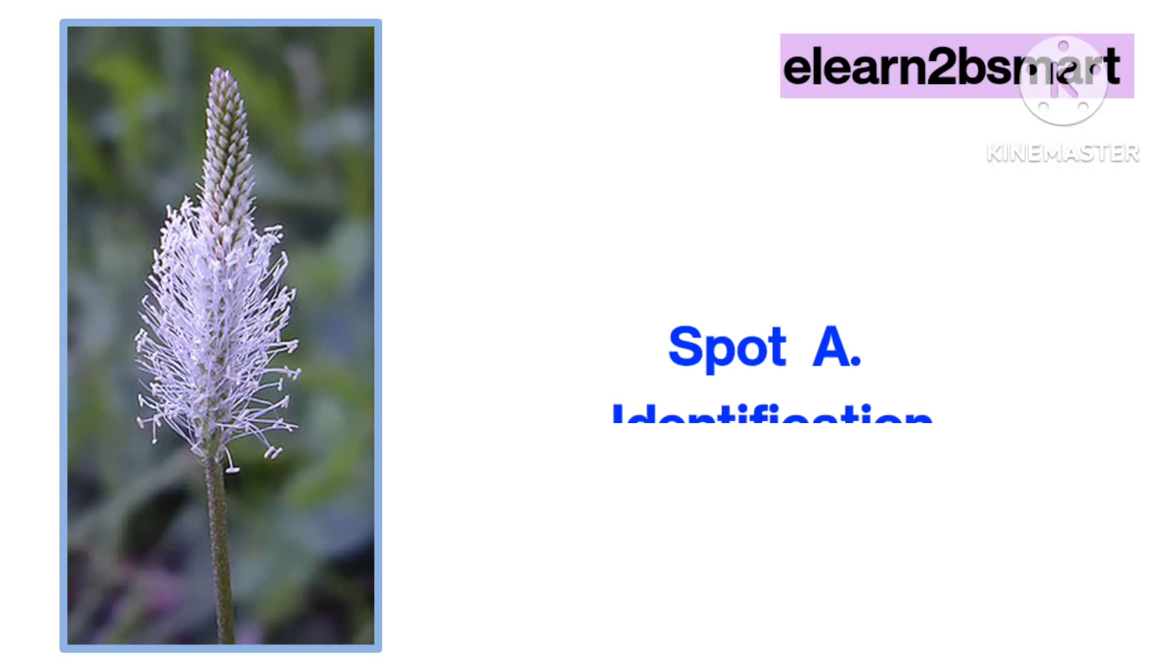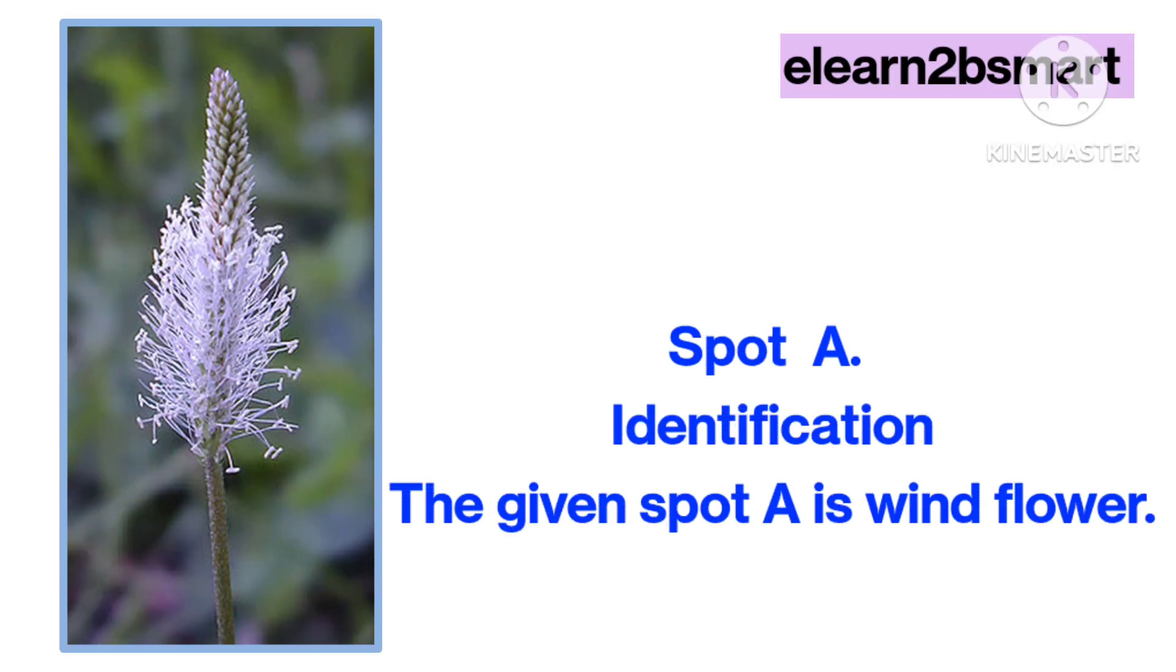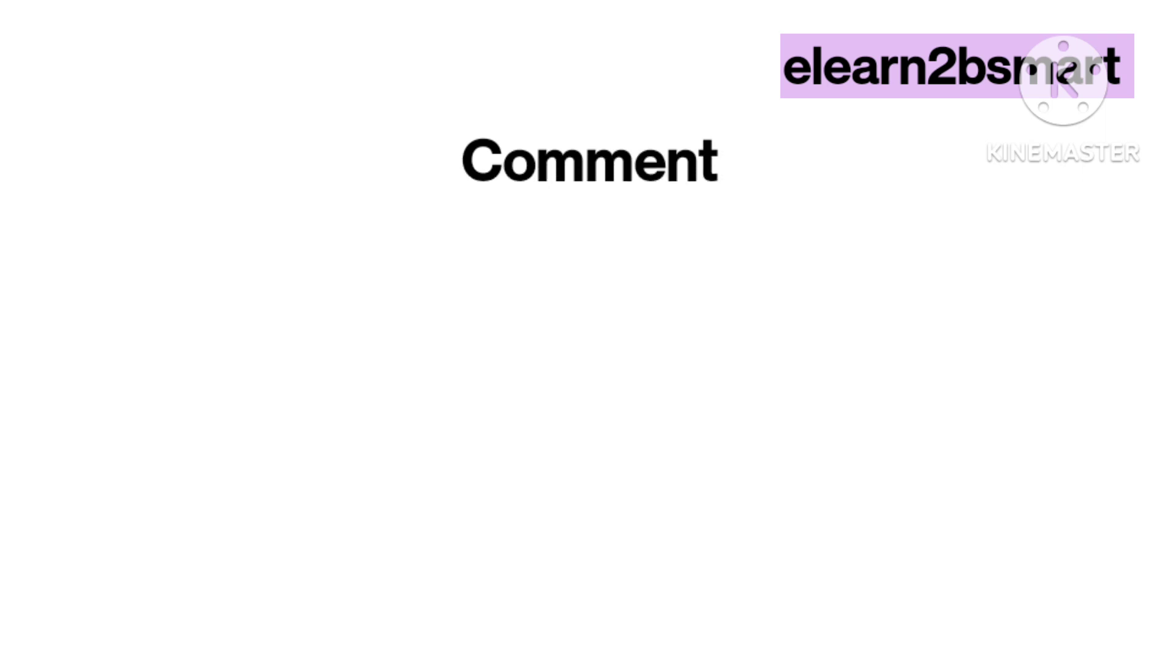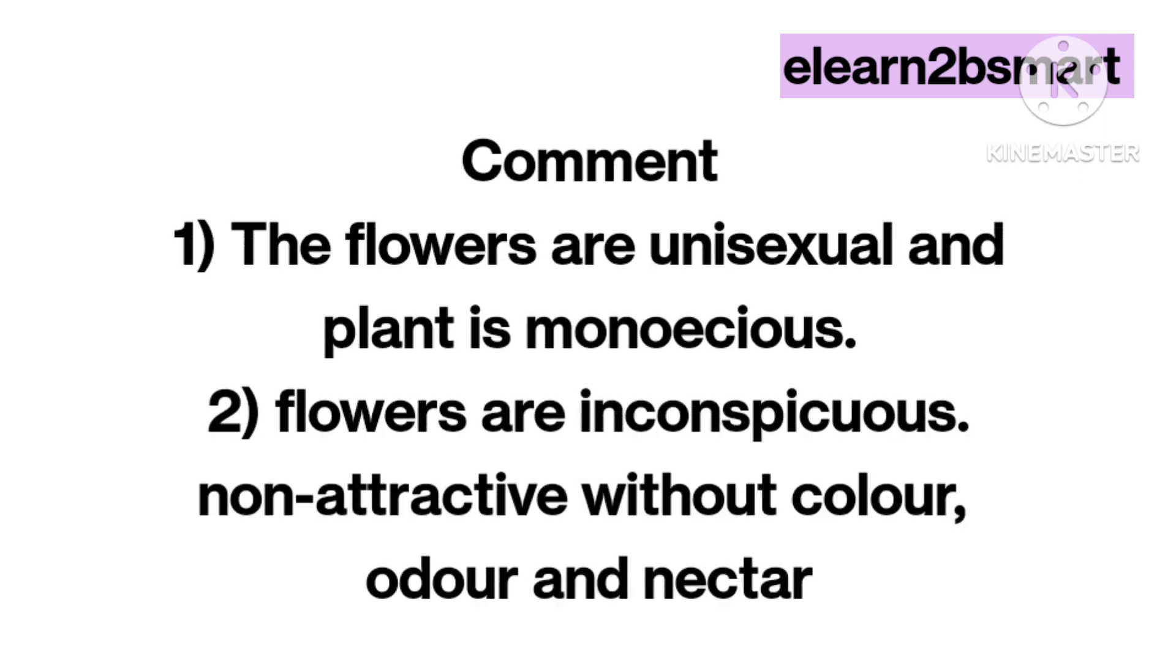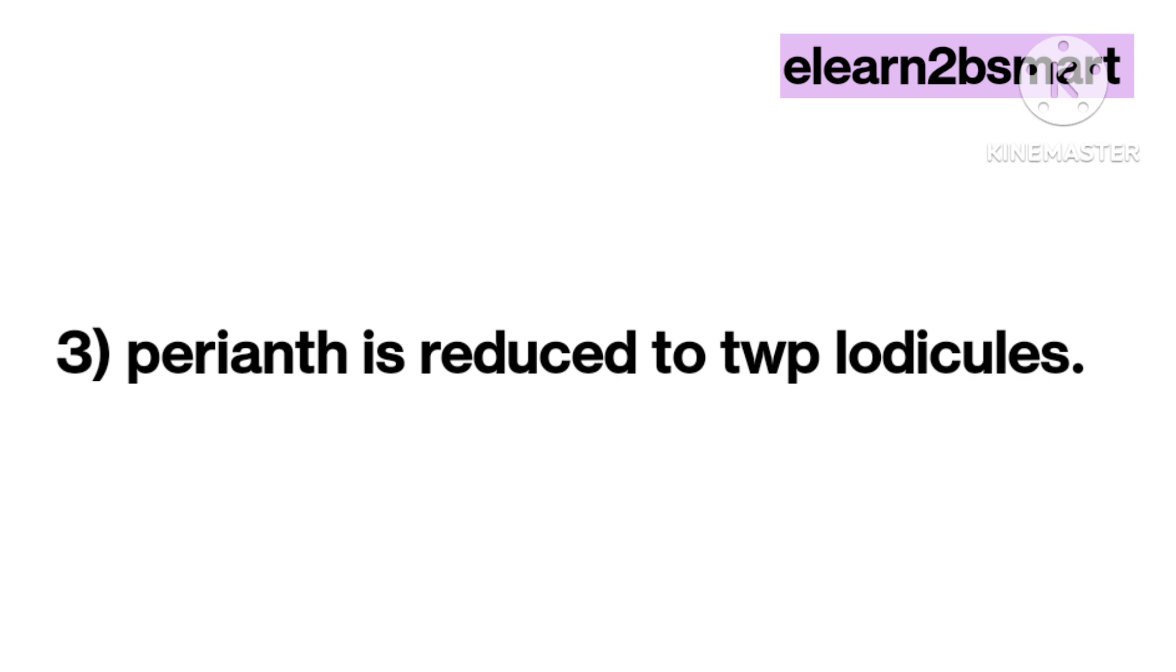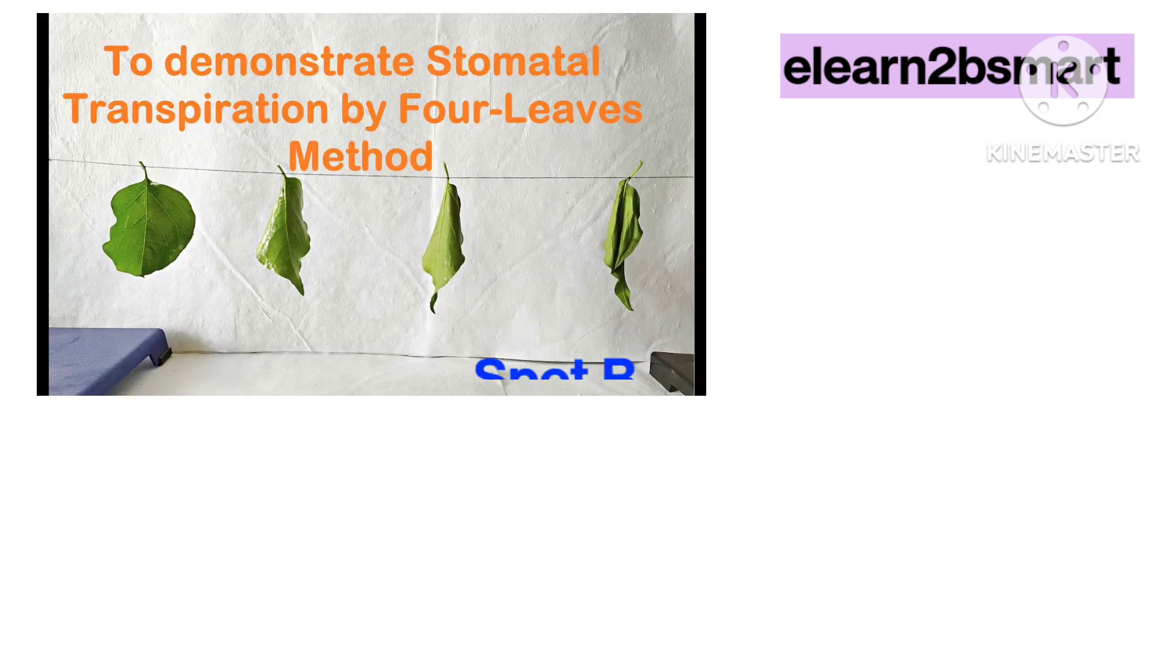Spot A identification: The given spot A is windflower. Comments: 1. The flowers are unisexual and the plant is monoecious. 2. Flowers are inconspicuous, non-attractive, without color, odor, and nectar. 3. Perianth is reduced to two lodicules.